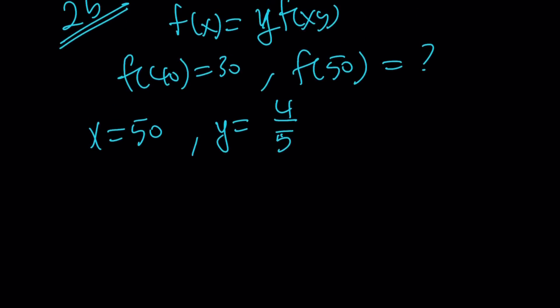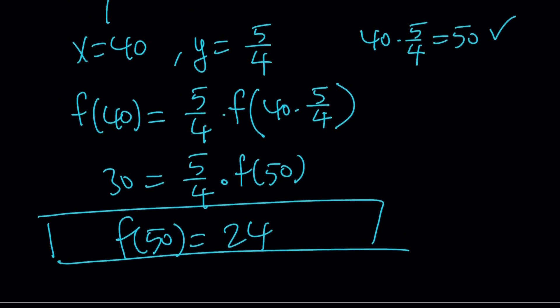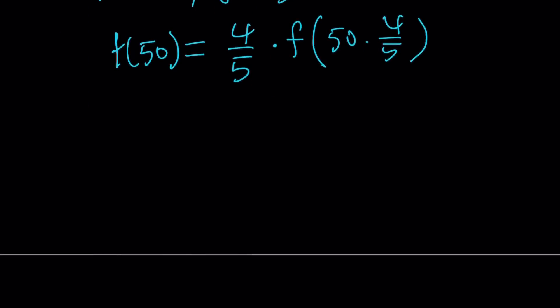Now, if you replace x with 50, you get f(50). And on the right-hand side, if you replace y with 4 fifths, you're going to get 4 fifths multiplied by f(50 times 4 fifths). Because x is 50. And remember, the first one, which is 2a, used x equals 40. So it used different x and y values. And this is going to give us the answer more directly, because we're looking for f(50). And f(40), this is going to be 40. f(40) is known to be 30. So this is going to be 24. And this brings us to the end of this video.